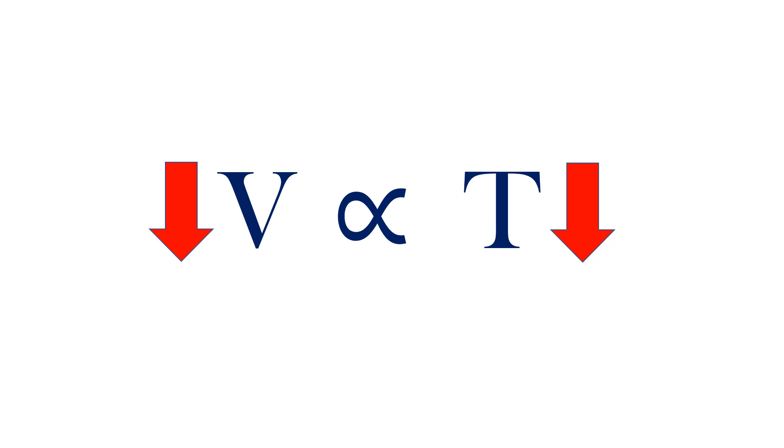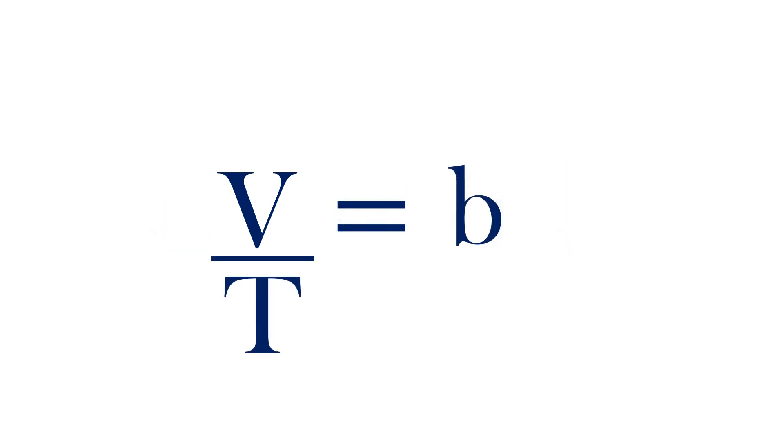Furthermore, we can divide both sides by the temperature and get the ratio of volume over temperature. This will always yield some constant. We'll call that constant B here.